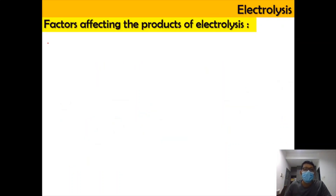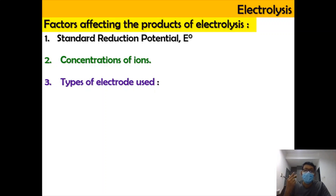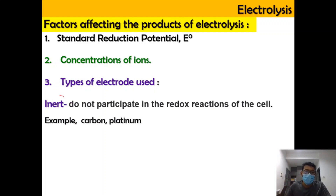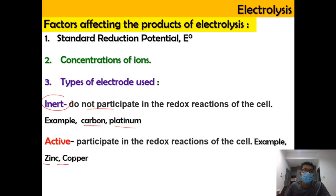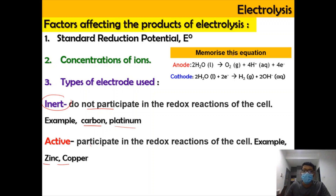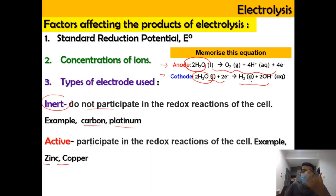Now let's look at the three factors affecting the product of electrolysis: the SRP value, the concentration of ions, and the type of electrode used. For electrode type, inert electrodes such as carbon and platinum do not participate in the redox reaction, while active electrodes such as zinc and copper do participate. You should also memorize the oxidation of water at the anode and the reduction of water at the cathode, as these are commonly tested equations.